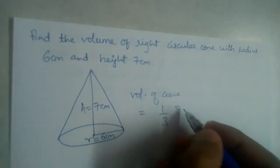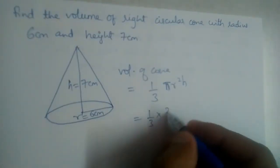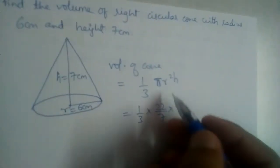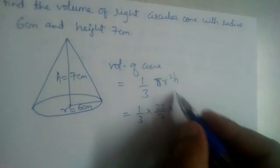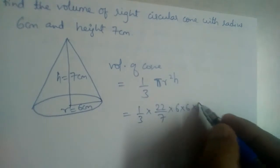It is 1/3 π r² h. Let us substitute the values: 1/3 times π, which is 22/7, and r is 6, so r squared is 6 times 6, and h equals 7.